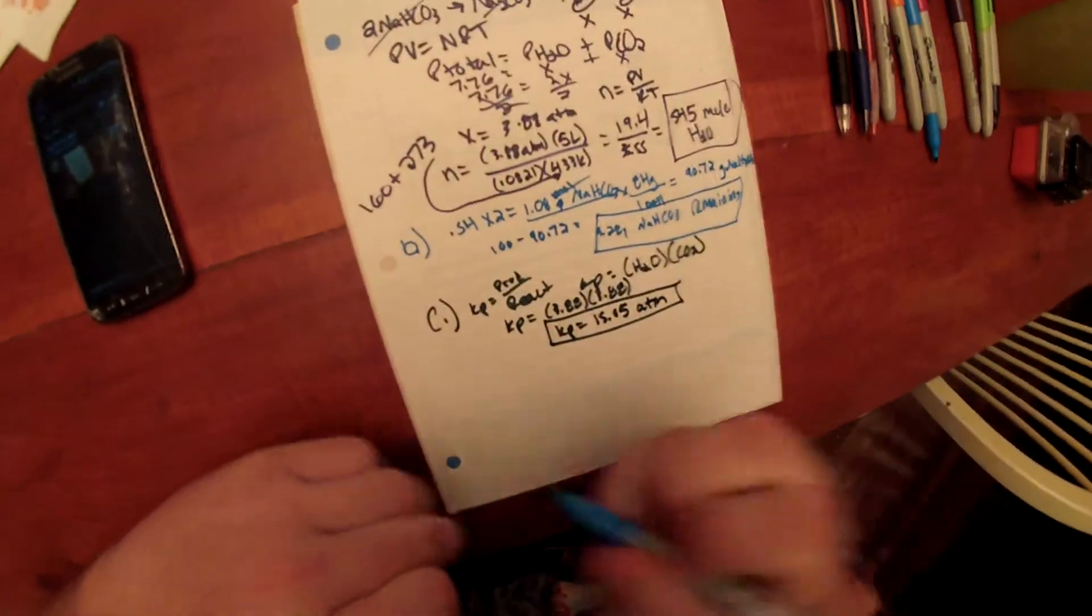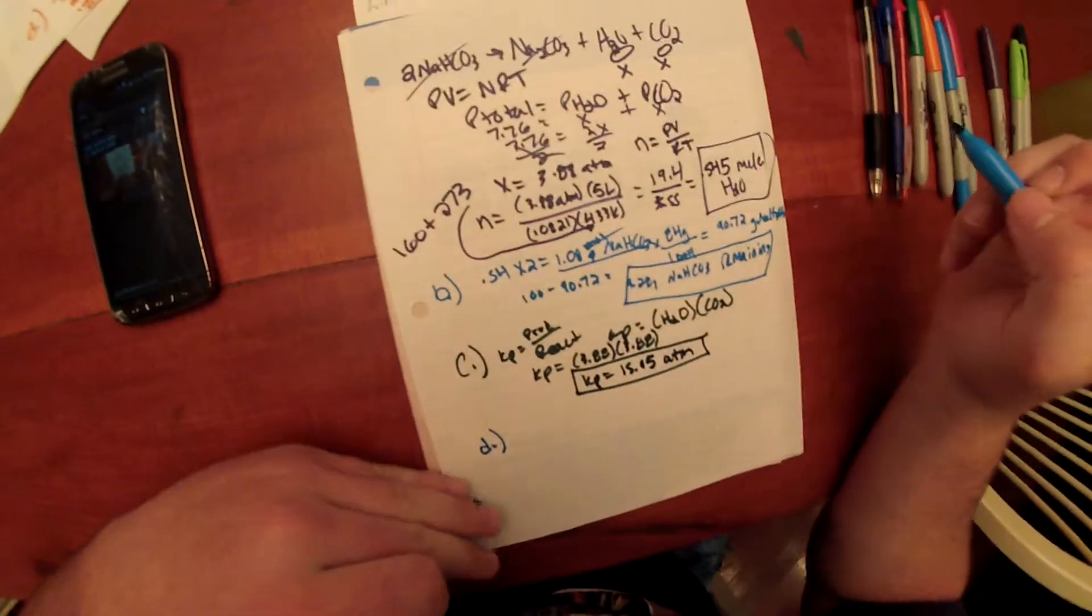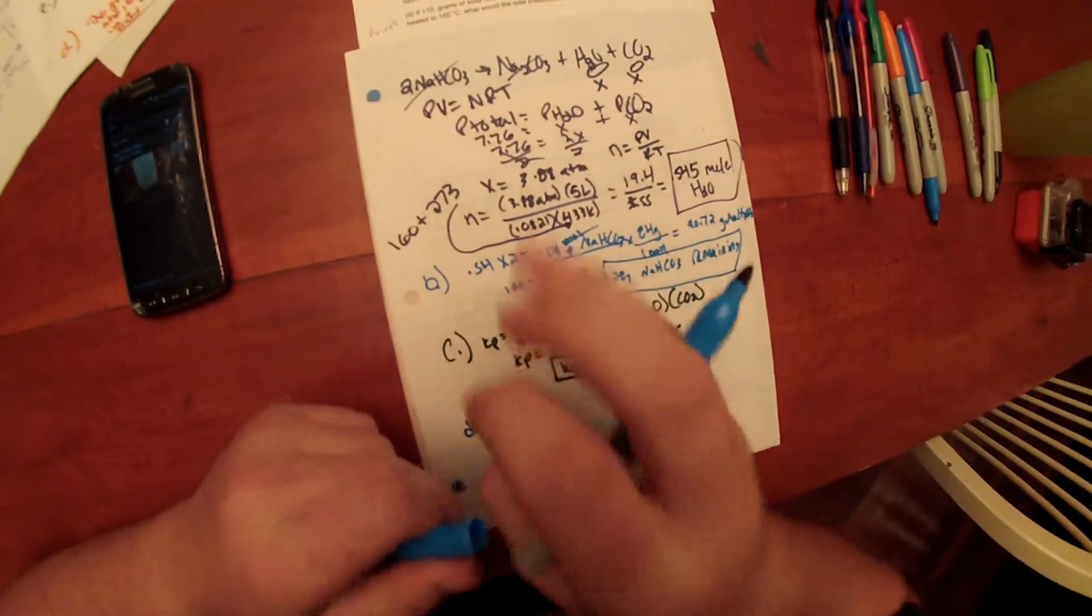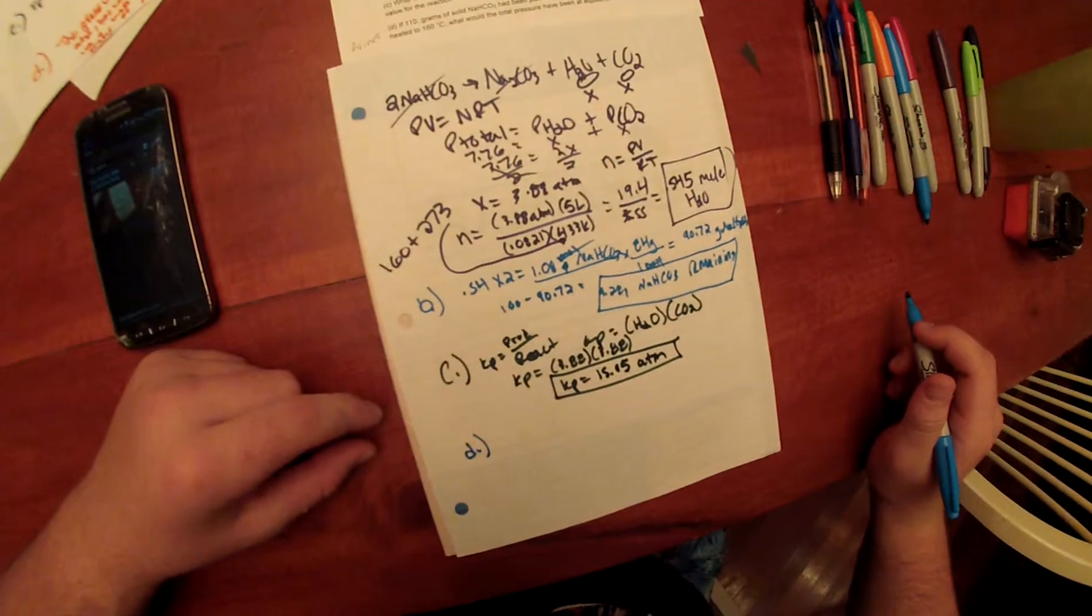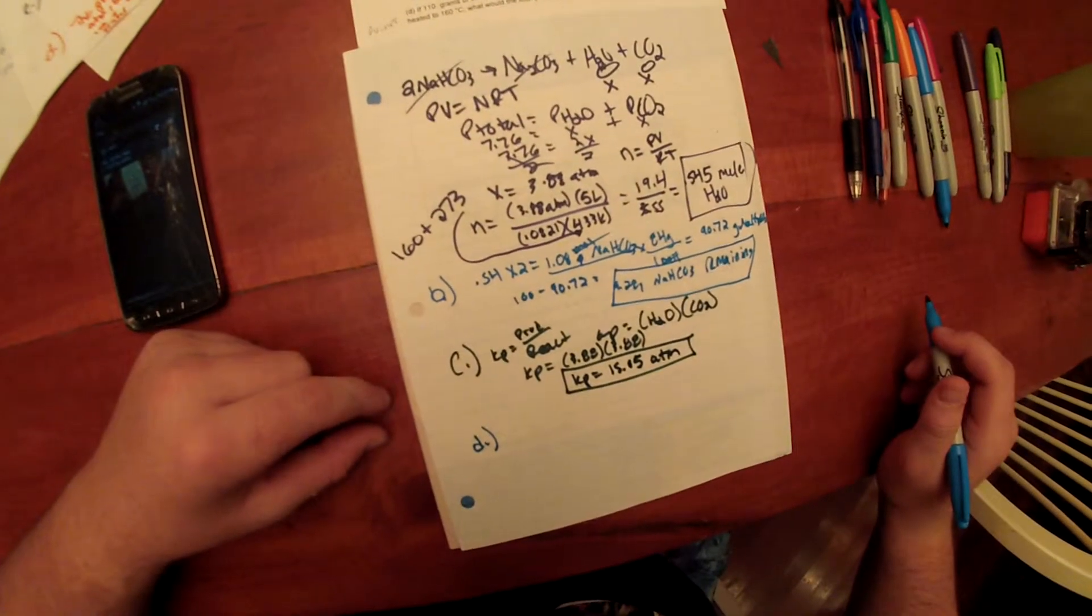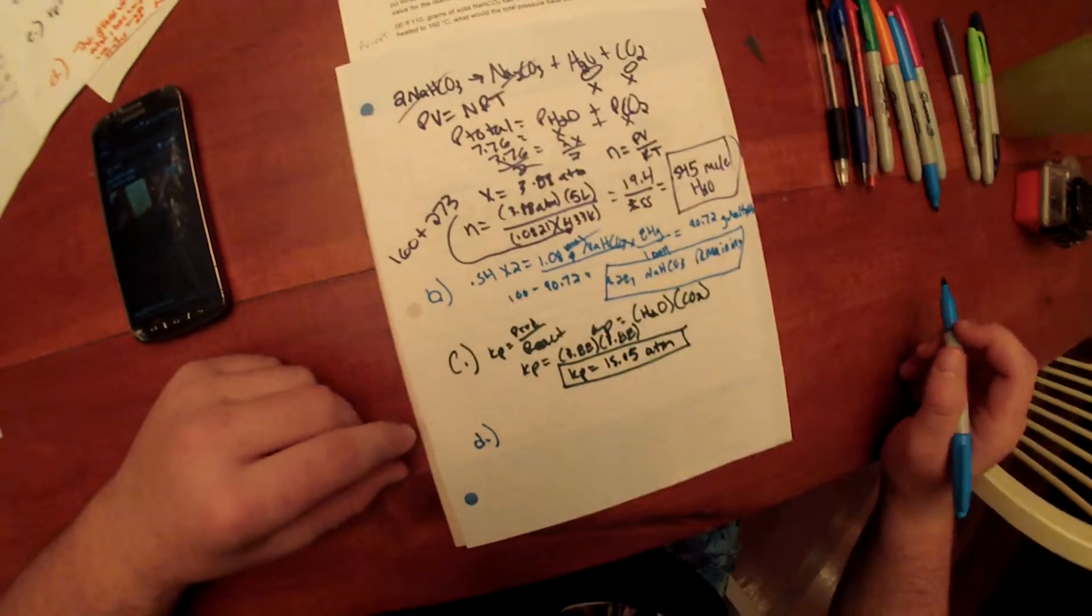For letter D, which asks, if 110 grams of solid NaHCO3 had been placed in the 5 liter container and heated to 160 degrees Celsius, what would the total pressure have been at equilibrium?